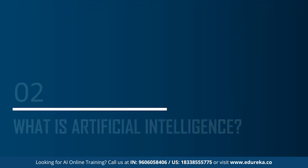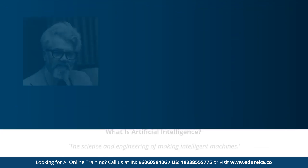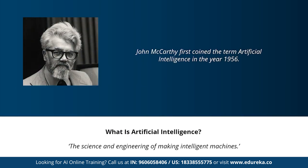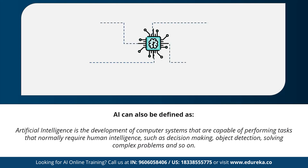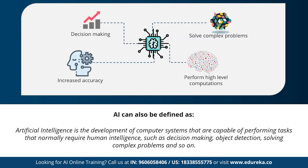The term artificial intelligence was first coined by John McCarthy. He defined AI as the science and engineering of making intelligent machines. In other words, artificial intelligence can be defined as the development of computer systems capable of performing tasks that require human intelligence, such as decision making, object detection, and solving complex problems. Artificial intelligence helps in decision making, solving complex problems, performing high level computations, and increasing the accuracy of predictions. These are the main features of AI.